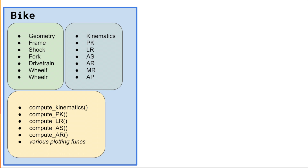Instead of showing you a big wall of code, I made this little graphic to help explain how I define a bike programmatically. I've created a bike class which allows me to store all the important data in a good data structure to define a bike. We have kinematics, pedal kickback, leverage rate, anti-squat, anti-rise, motion ratio, axle path — these are attributes of the bike.